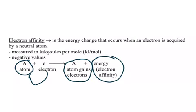Electron affinity is measured in kilojoules per mole. The reason it has negative values is that whenever energy is released, we use the negative sign to designate energy going out or being released. Just like electronegativity, this also has patterns.